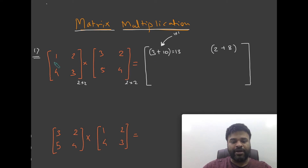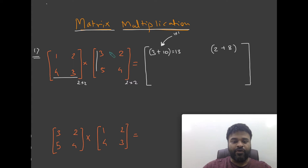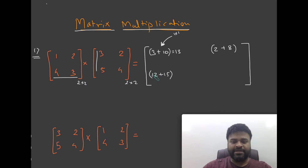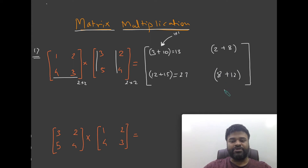We've multiplied the first row with both columns. Now we do the second row with both columns. Multiply the second row with the first column: 4 times 3 is 12, and 3 times 5 is 15, so 12 plus 15 is 27. Then multiply the second row with the second column, which gives 8 plus 12. That's how you solve these matrices.